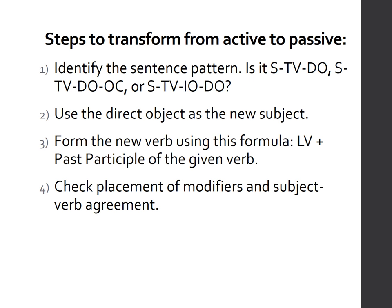The first step is to identify the sentence pattern — S-T-V-D-O, D-O-O-C, or I-O-D-O. The second step is to use the direct object as the new subject — whatever the direct object is, that will be the new subject in the passive form. For the verb, use this formula: a linking verb (any form of the verb 'be') plus the past participle of the given verb. It's important that you know how to form past participles of different verbs. Finally, check that modifiers are placed correctly and that the subject and verb agree with each other.